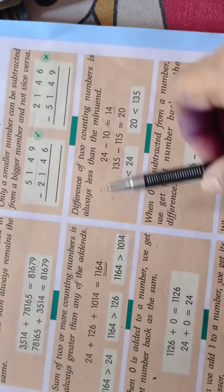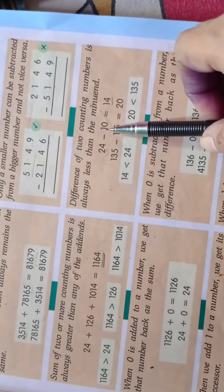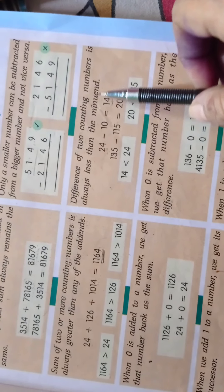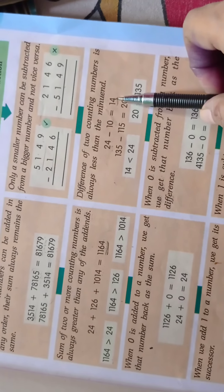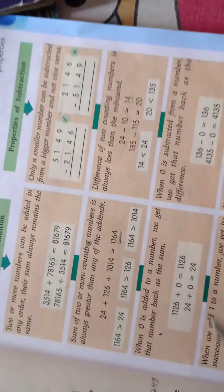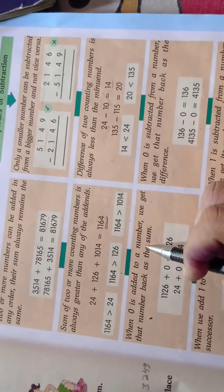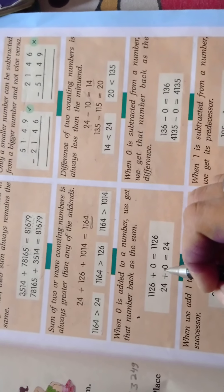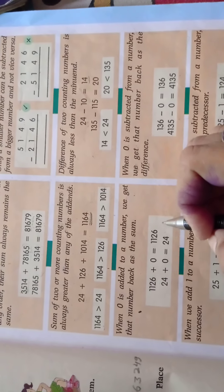Subtraction में: the difference of two counting numbers is always less than the minuend. जब आपने दोनों का difference निकाला — minus किया — तो answer हमेशा minuend से कम होगा।